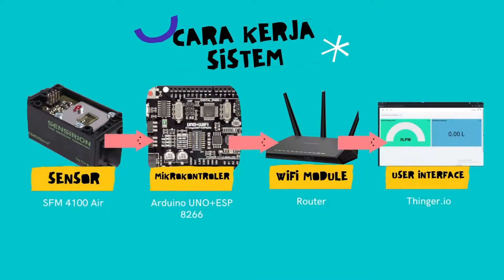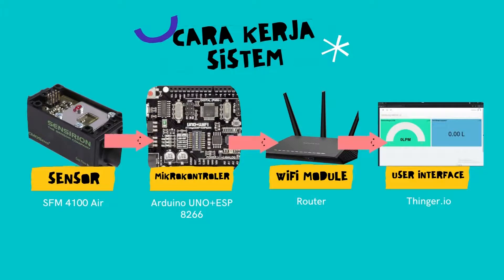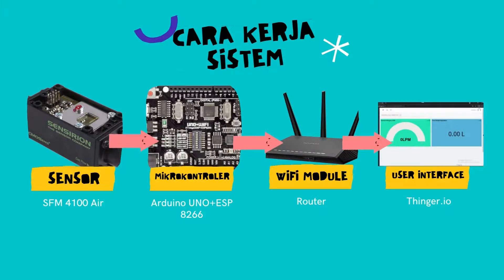Cara kerja sistem: Cara kerja alat cukup sederhana. Sensor akan membaca laju aliran oksigen, kemudian hasil dari pembacaan sensor akan diolah pada mikrokontroller Arduino. Hasil pengolahan data akan menghasilkan dua satuan nilai: yang pertama yaitu nilai flow rate oksigen, dan yang kedua total volume oksigen yang digunakan.